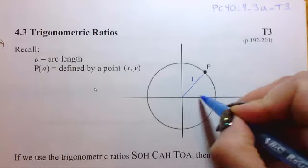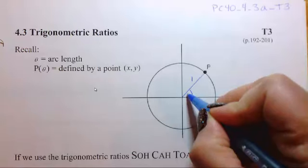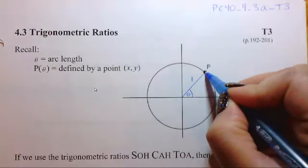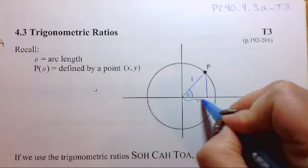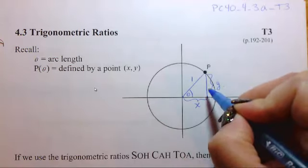So, really, this line from here to here also is 1. Now, this, we're going to mark our angle. This is theta. And the distance from here is x, and the distance from here to there is y.